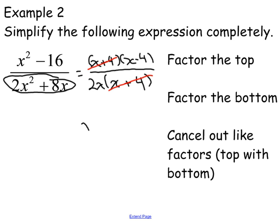So this x plus 4 will cancel out with this x plus 4. And you are left with x minus 4 over 2x. That's your final answer.